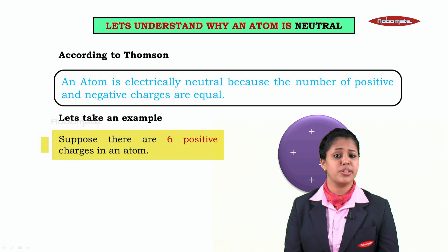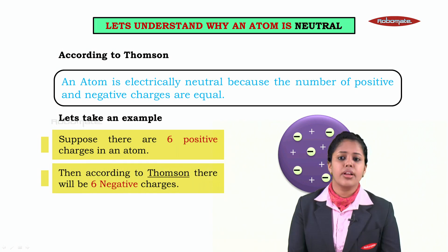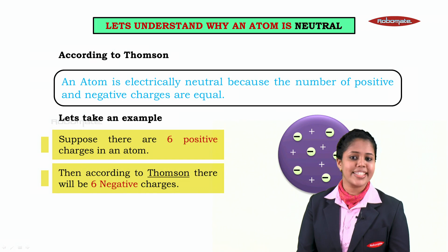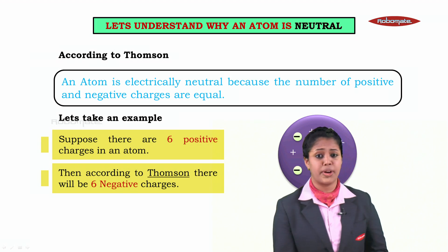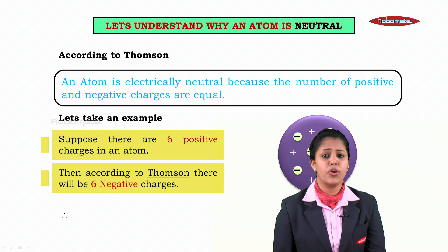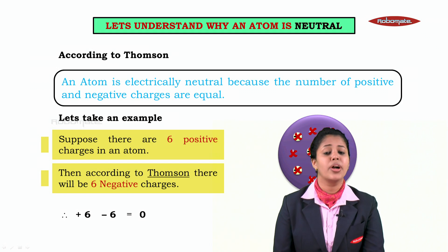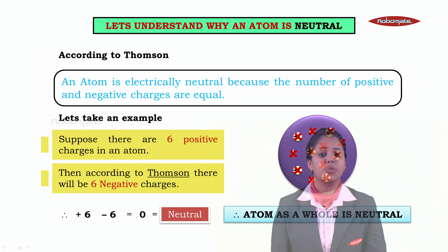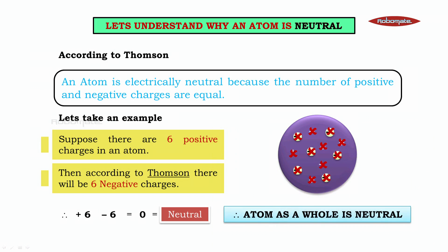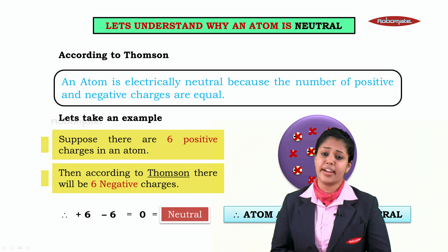Suppose there are six positive charges in an atom — counting: 1, 2, 3, 4, 5, and 6. Then according to Thompson there will be 6 negative charges: 1, 2, 3, 4, 5, and 6. Therefore, plus 6 minus 6 equals 0 — and 0 means neutral. Therefore, the atom as a whole is neutral because the number of positive and negative charges are equal. The first person to tell us about this equal positive-negative charge balance was Sir J.J. Thompson.